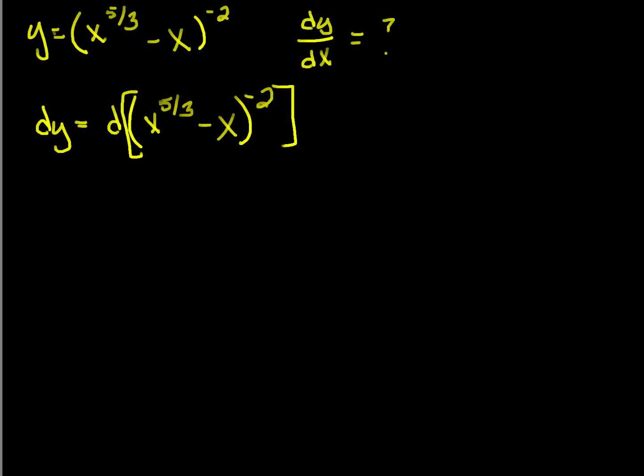So computing the differential of y, this is the differential of x to the five-thirds minus x, all raised to the minus two power. So first things first, we're going to deal with exponents. The exponent comes down, becomes my new coefficient, and it subtracts one to get my new power. So this is equal to negative two x to the five-thirds minus x, all raised to the minus third power times the differential of our u. So that's x to the five-thirds minus x.